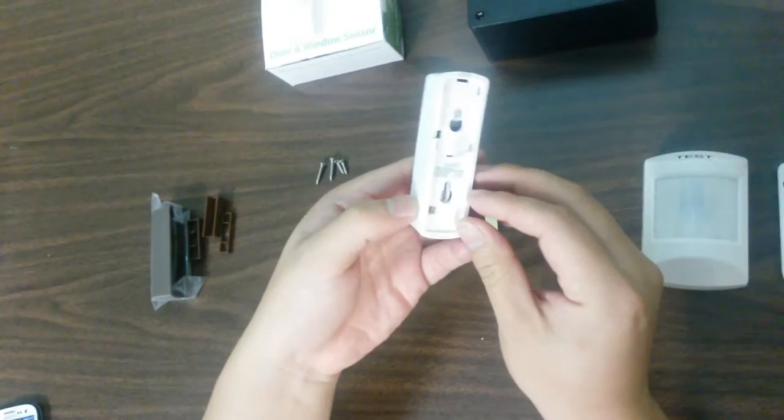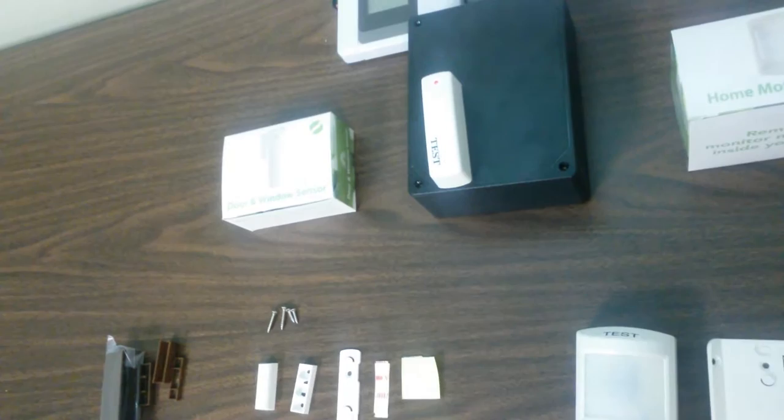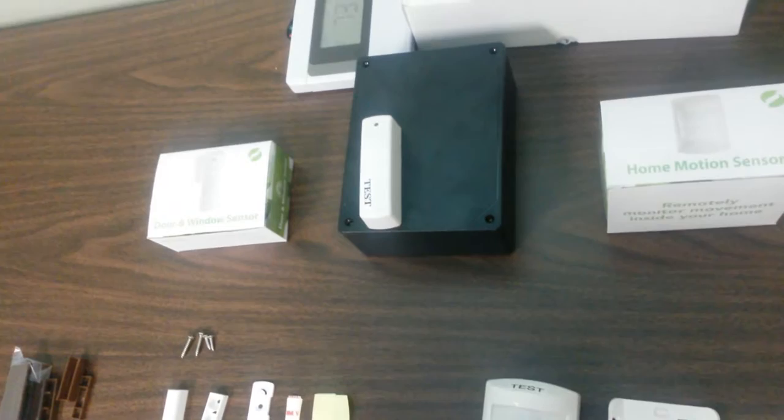This is the door sensor. To include it into the hub, once you call Chris, he will advise you to pull the tab on the back and stick it on top of the hub or as close as possible within 12 inches. This process may take up to two minutes.